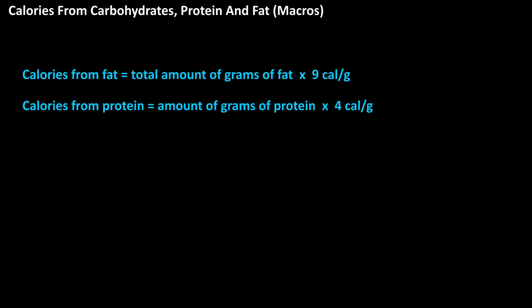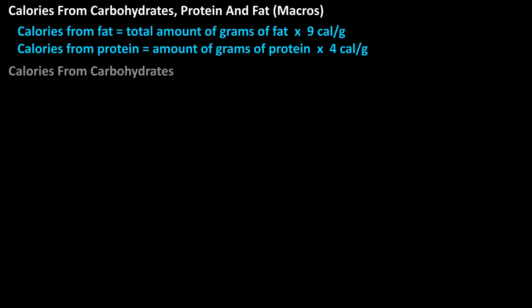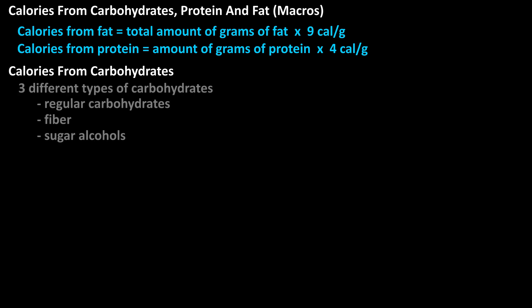Now for carbohydrates, and this is a little bit more complicated. When it comes to calories from carbohydrates, to make things easier we need to break down carbohydrates into three different types: regular carbohydrates, fiber, and sugar alcohols.